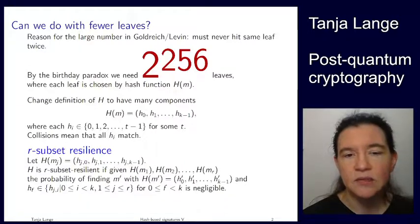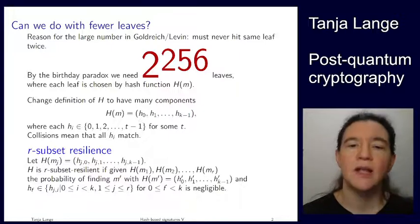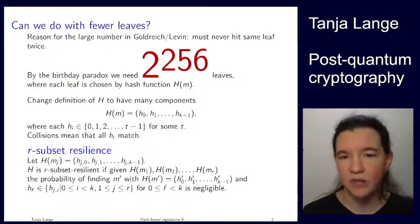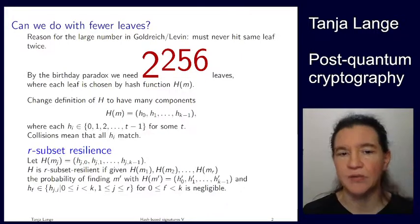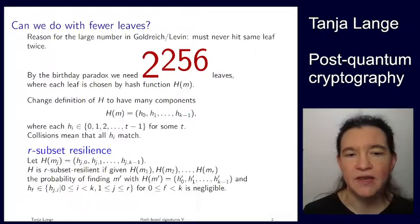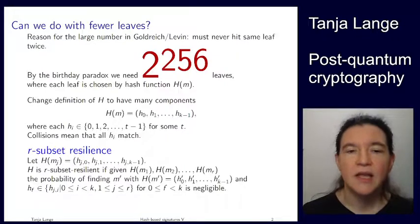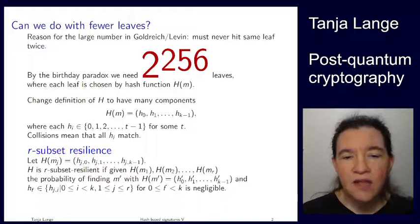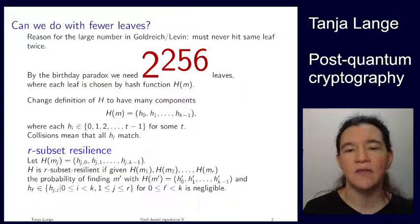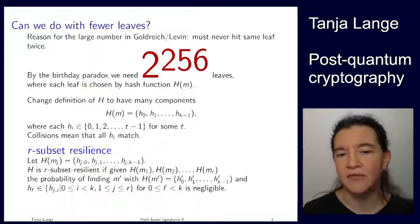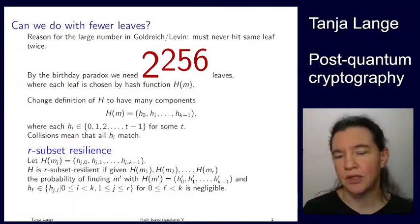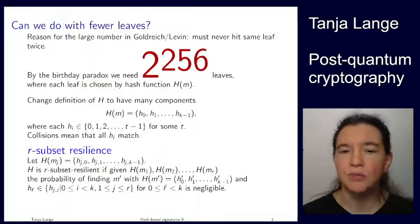So now we have to have double indices, and so I'm using the first index, the j here, to indicate which message this was. So j is a number between 1 and r. And the second index, like up here in the definition of the hash function, that is just giving the horizontal position between 0 and k minus 1. So it's the first block, the second block, etc. And this hash function satisfies that it has r-subset resilience.